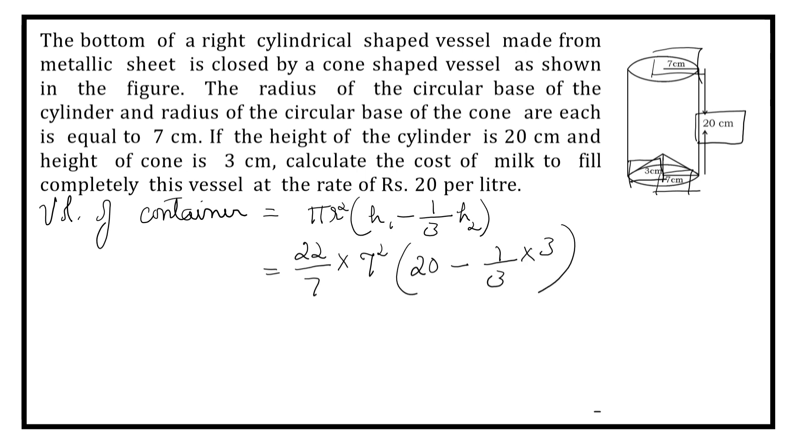So many things have become easier for us now. Now we can simplify. 7 and 7 get cancelled. Here, 3 and 3 get cancelled. Here, 22 into 7. What is it? We can directly solve it now since there is no division operation in the next step.